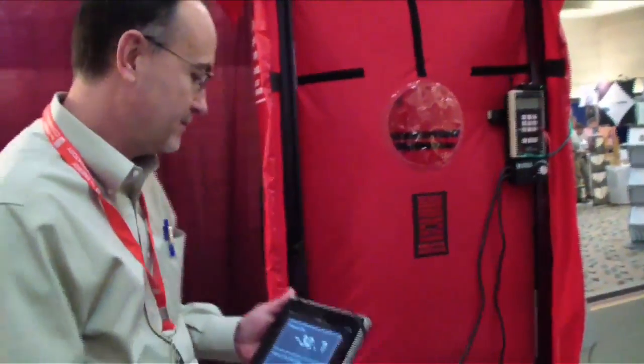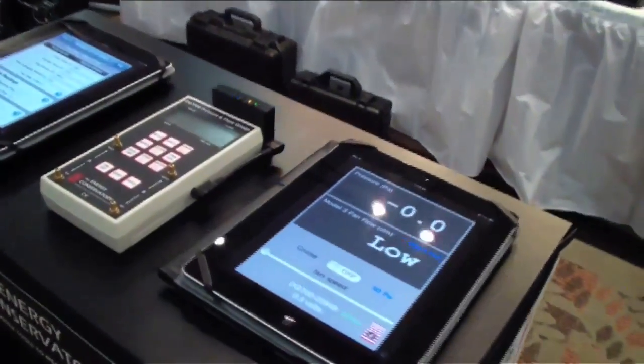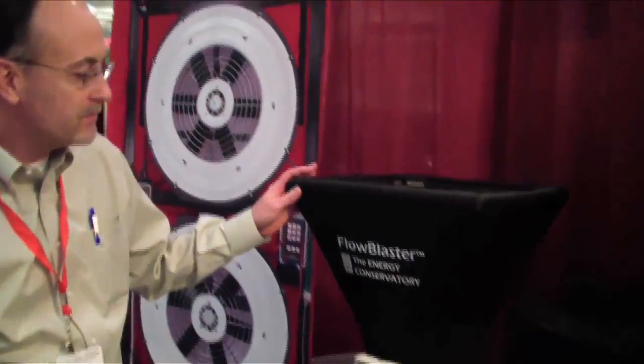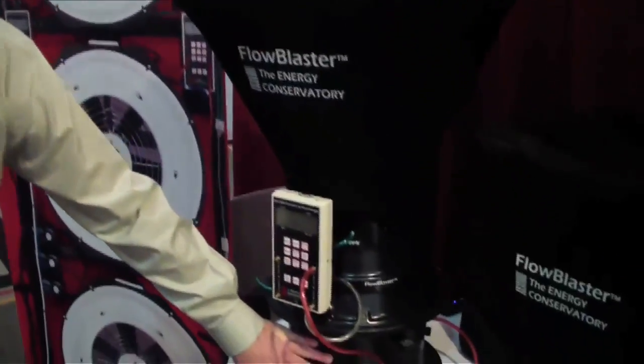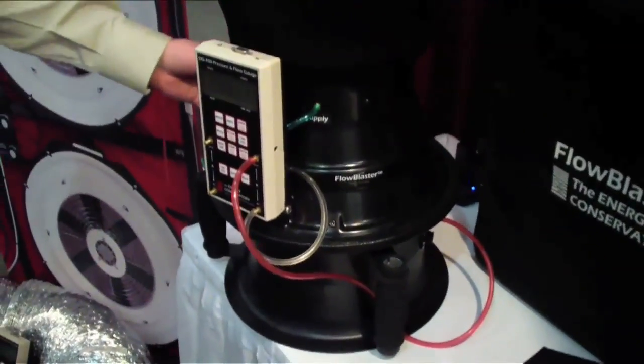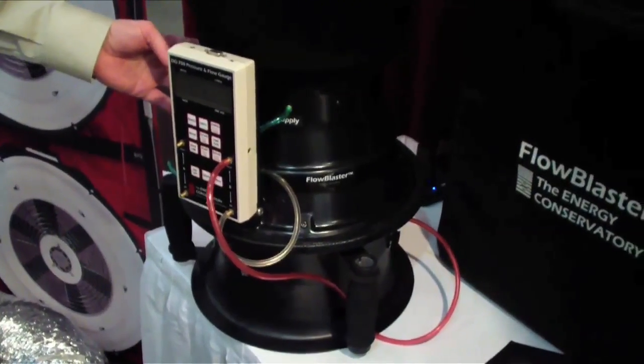The Flow Blaster is actually an attachment for the Duct Blaster system. If you already own a Duct Blaster fan, what we're doing here is attaching a flow measuring station and a capture hood to turn this into a powered capture hood.